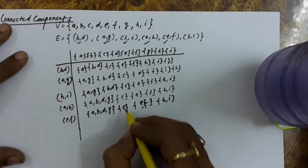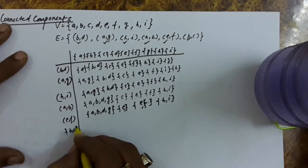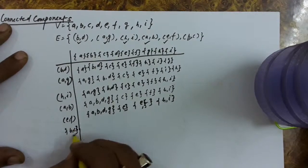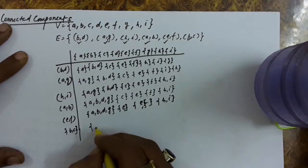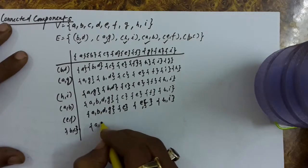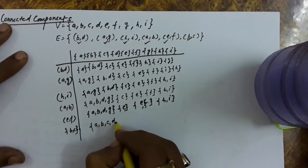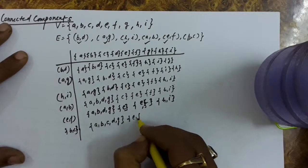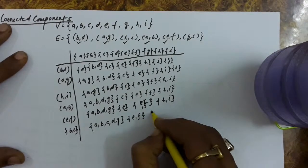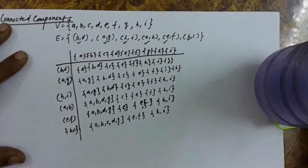We make a union of these two sets. Then the edge B-C: B and C are in two different sets, so we do the union of these two. The resulting sets are A, B, C, D, G — then E, F — and then H, I.